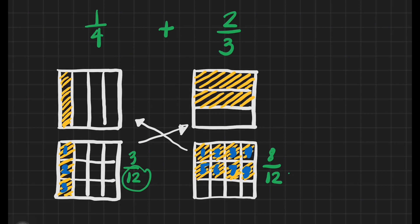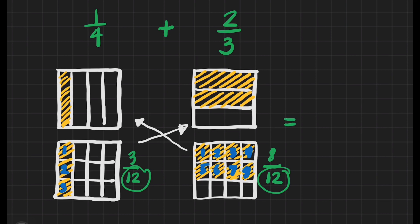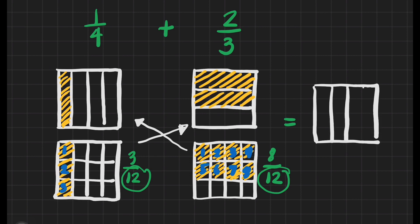These two are already similar fractions and we can add them because they have the same denominator. Now we will make another box and follow how it is divided and shaded. In the 1st box we have 3/12, so we have to shade 3 parts: 1, 2, 3.